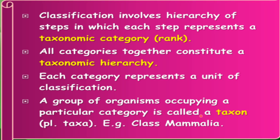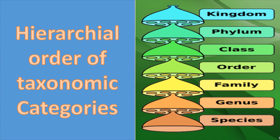For example, class Mammalia can represent a taxon. Here is the hierarchical order of taxonomic categories: species, genus, family, order, class, phylum, and kingdom. These are all taxonomic categories, and this hierarchical order is used for classification. We place species first, then genus, family, order, class, phylum, and kingdom — this is called the ascending order of taxonomic categories.